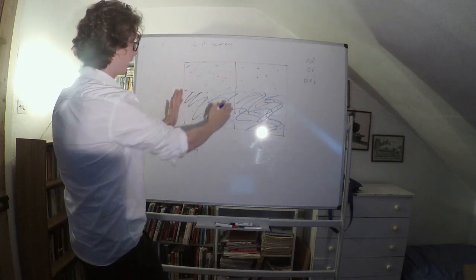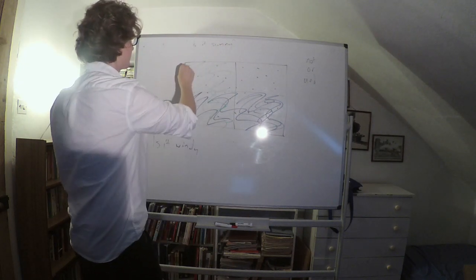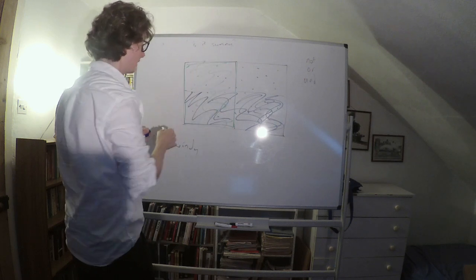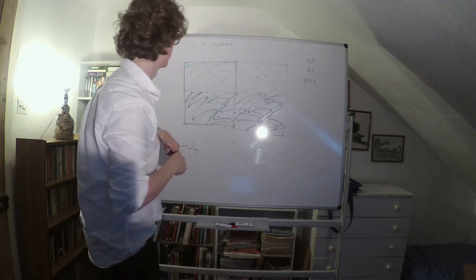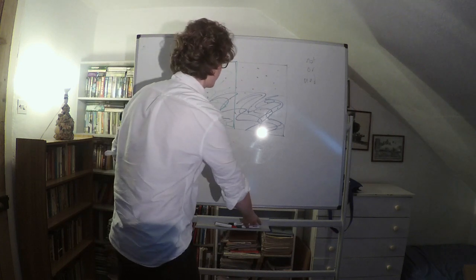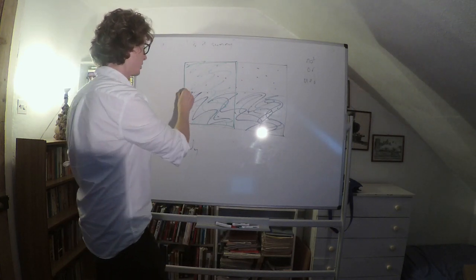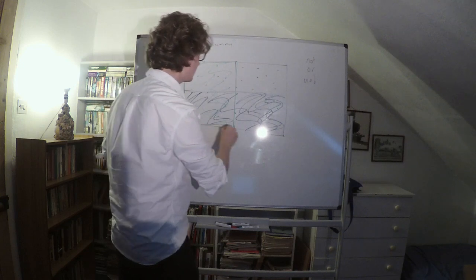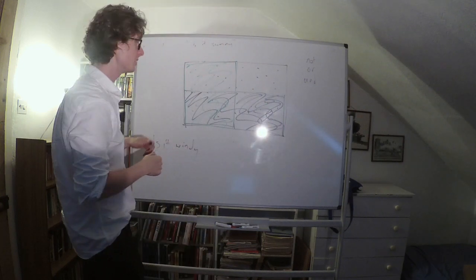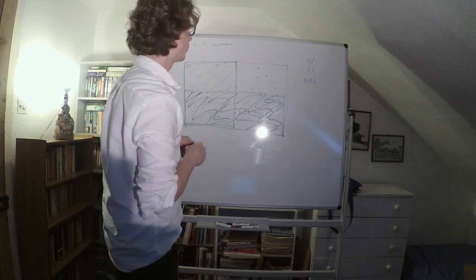This green area — I'll draw around it just so it's a little clearer. This is the proposition that it's sunny, because these are all and exactly the worlds where it's sunny. This is the proposition that it's windy, because it's the set of worlds where it's windy.